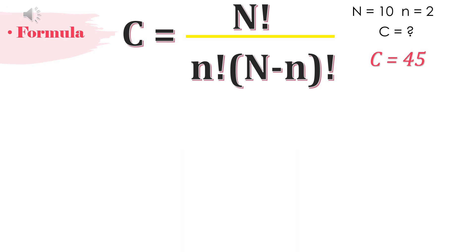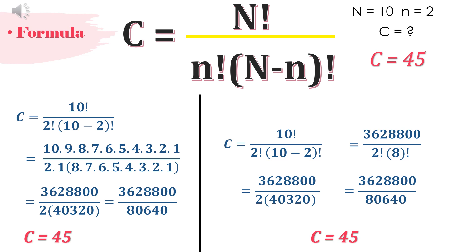For our next example, we have 10C2. After using the calculator, we obtained a result which is 45. Let's substitute the given values. C equals, we have 10 factorial over 2 factorial times the quantity of 10 minus 2 factorial. 10 factorial is equivalent to 10 times 9 times 8 times 7 and so on. We have 2 factorial is 2 times 1, and then 10 minus 2 is equal to 8, which means 8 factorial. This means 8 times 7 times 6 times 5 and so on. Then simplify. Try this on your calculator to see if you get 45.